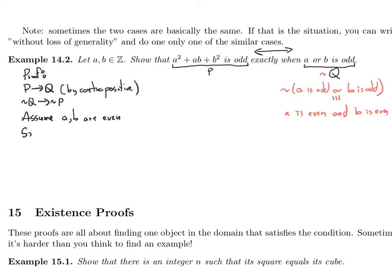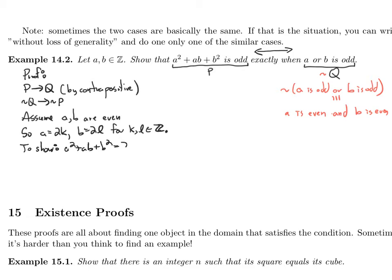So we're going to assume a and b are both even. As usual, a = 2k and b = 2l for integers k and l. We want to show that this expression is not odd — we're assuming q is false and want to show p is false. So we want to show that a² + ab + b² is even.